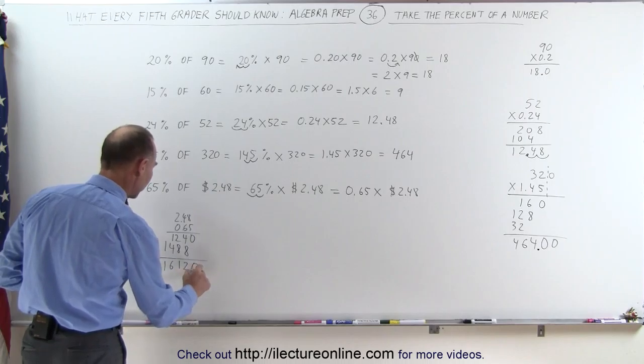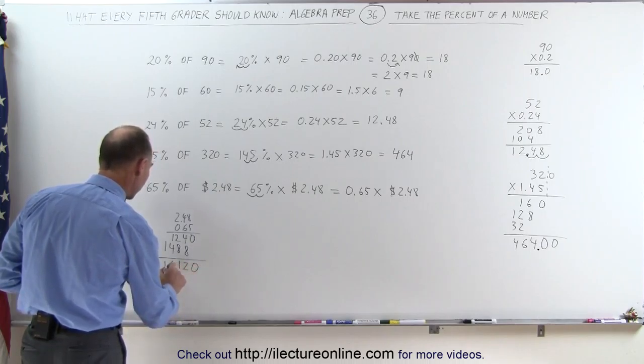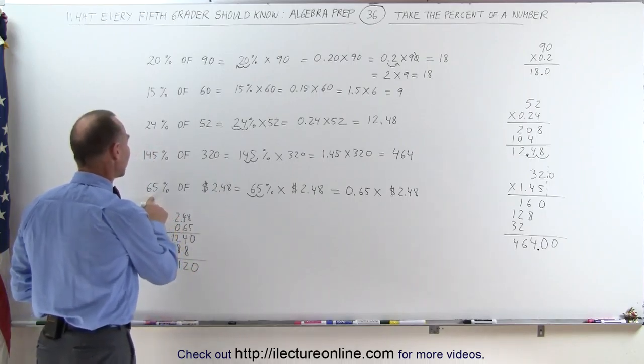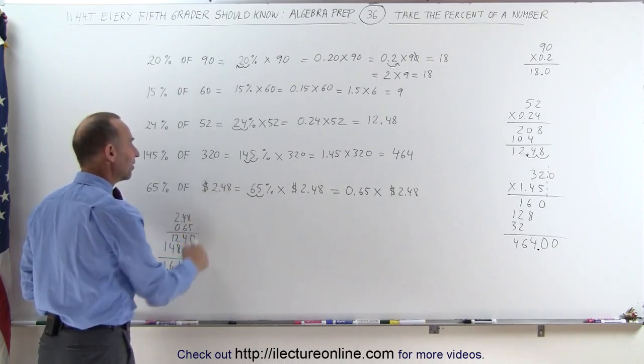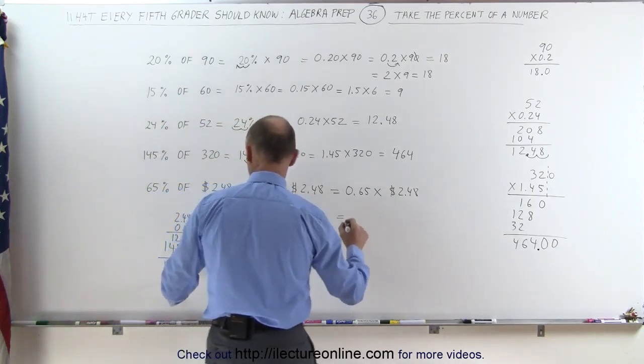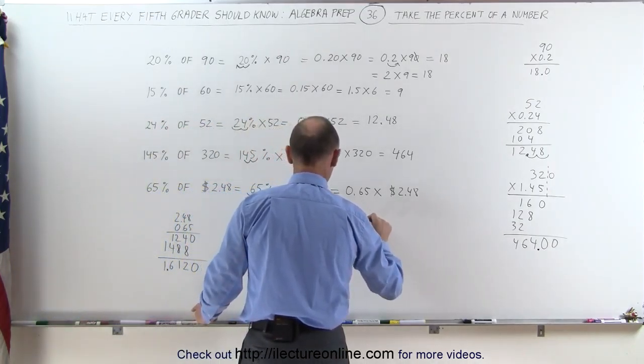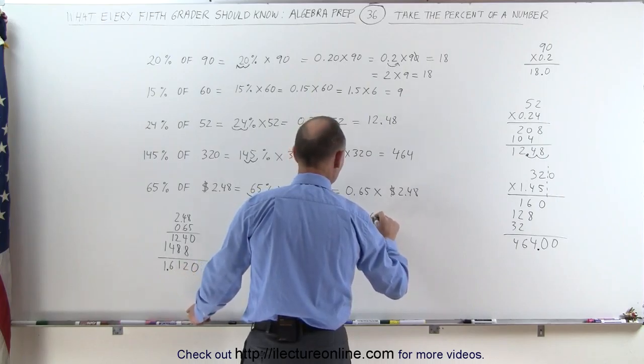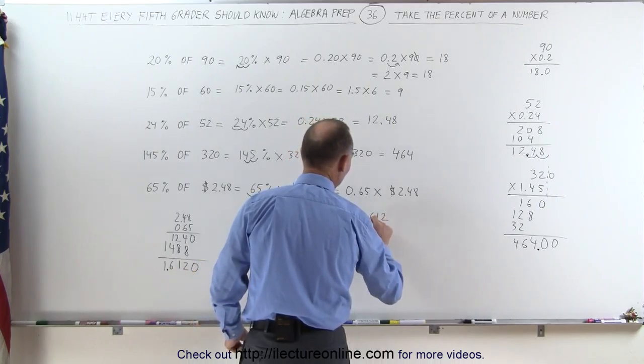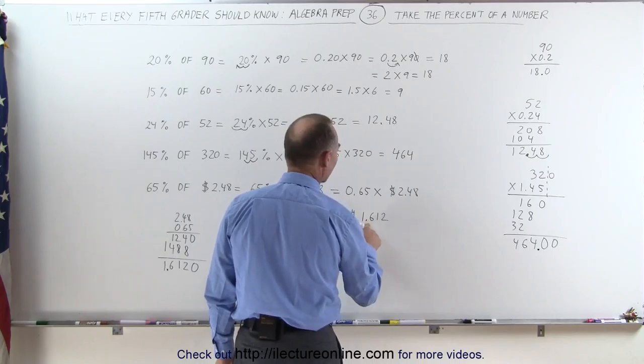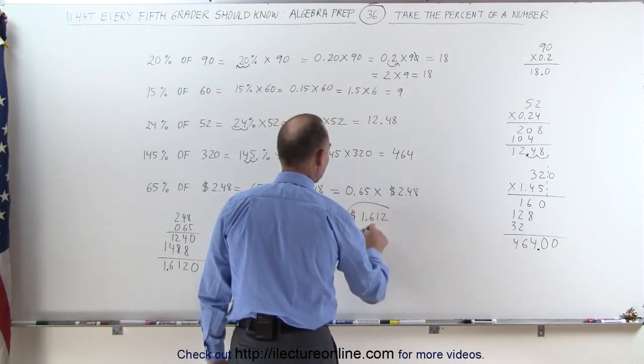I have 4 decimal places—1, 2, 3, 4—which means that 65% of $2.48 is equal to $1.612. We can just simply write it like that, $1.612, and that's the answer.